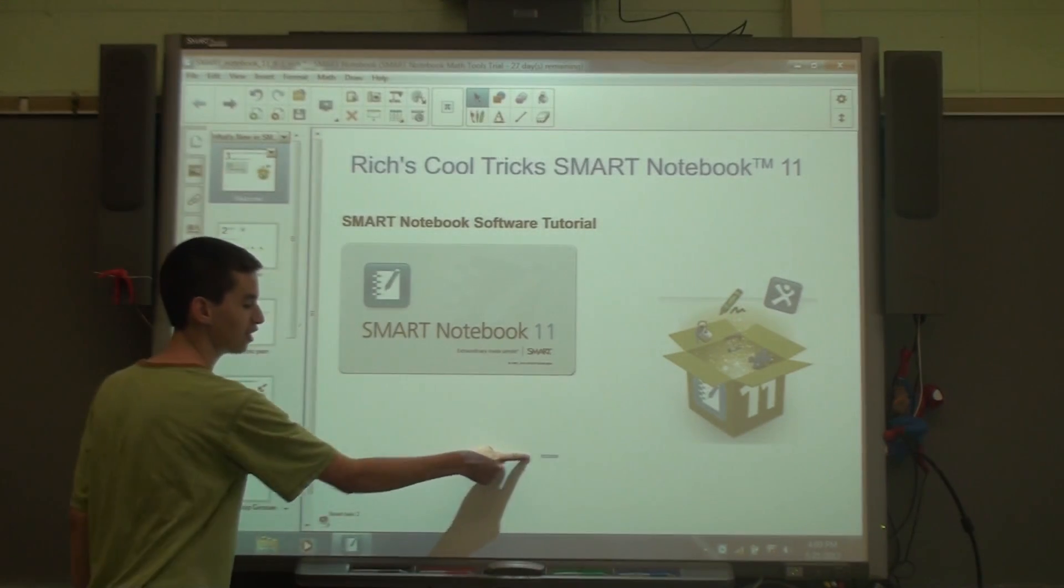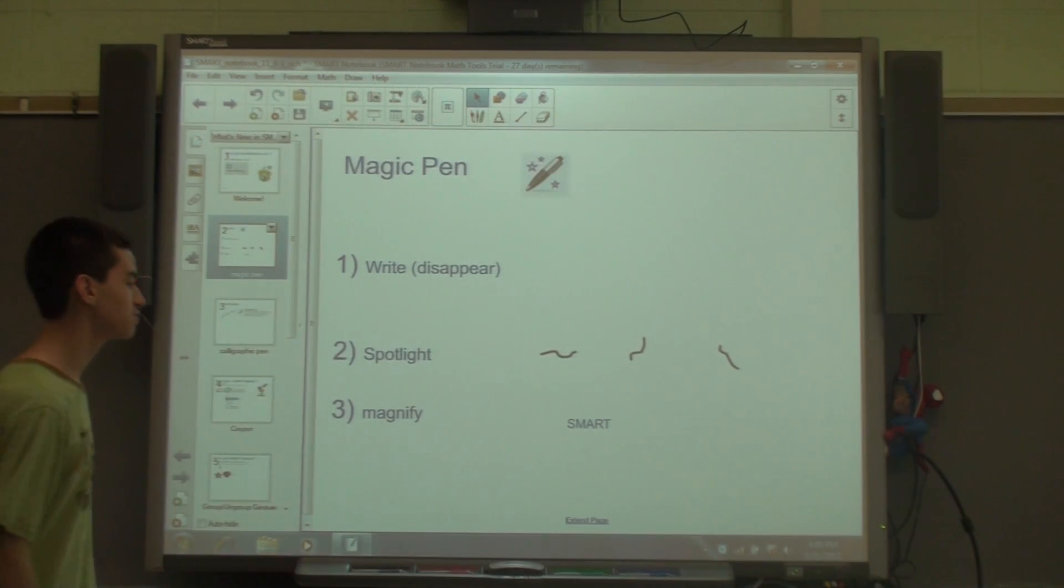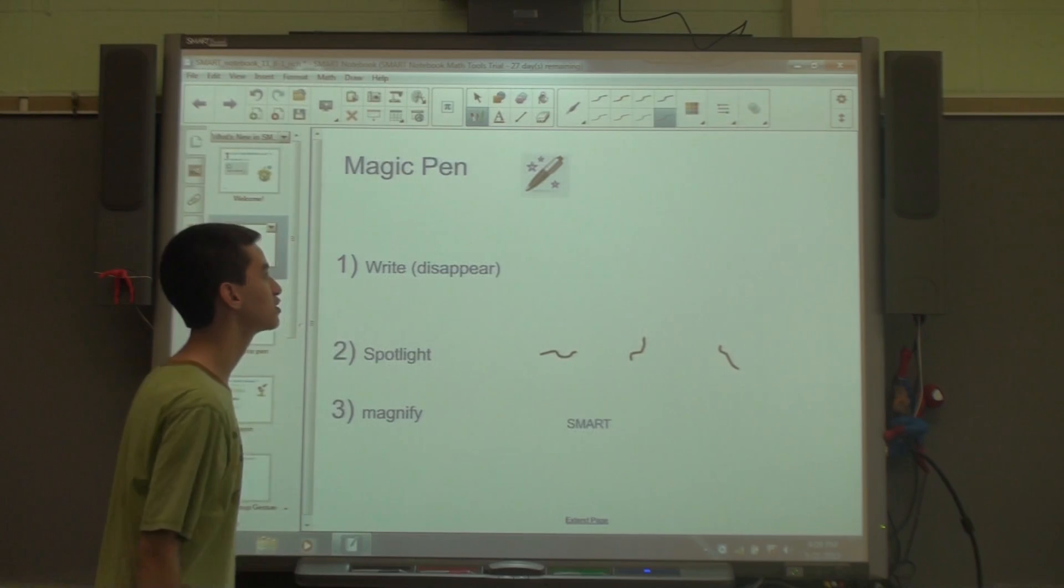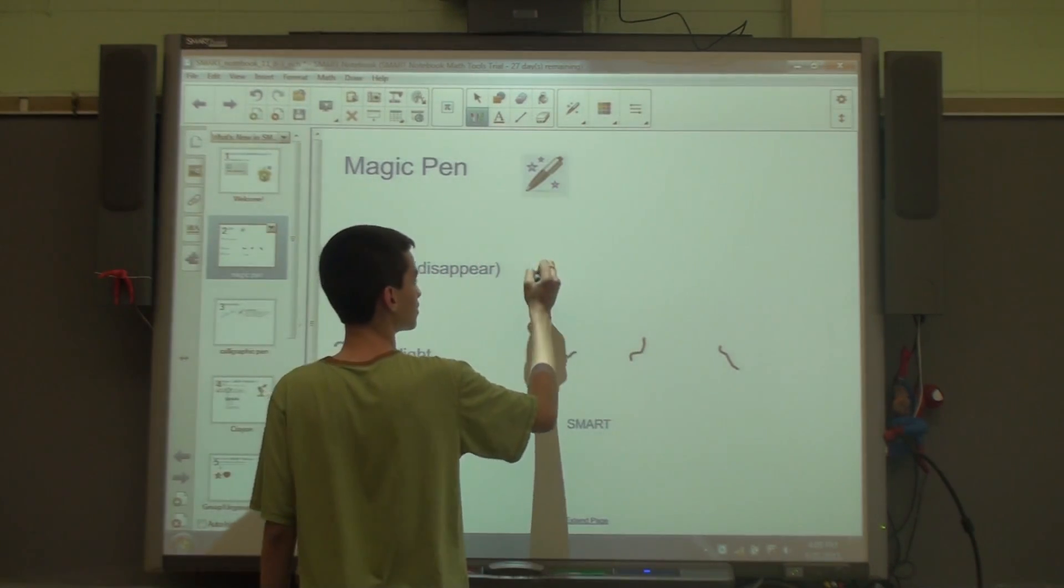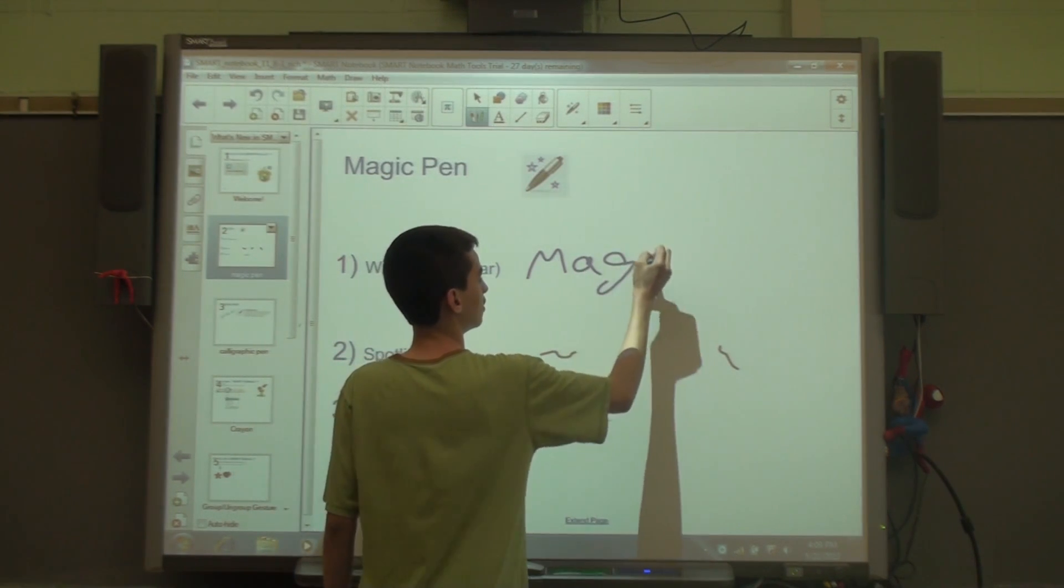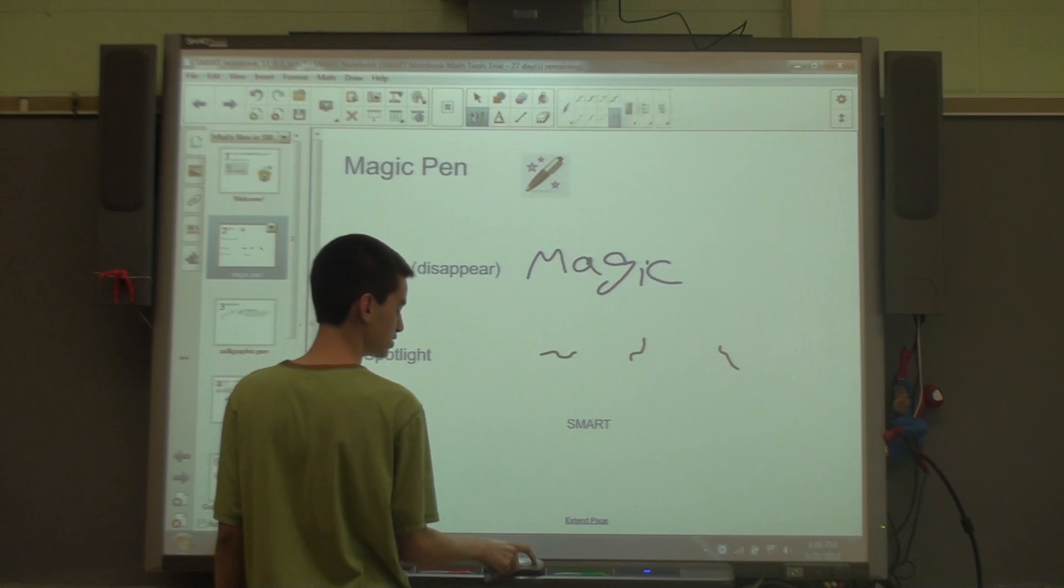If I move my finger right to left, I'm able to go to the next page. The first pen trick I'm going to show you is with the magic pen. I'm going to change my pen to the magic pen. Whatever I write with the magic pen, I'm not able to erase. It will automatically disappear by itself.